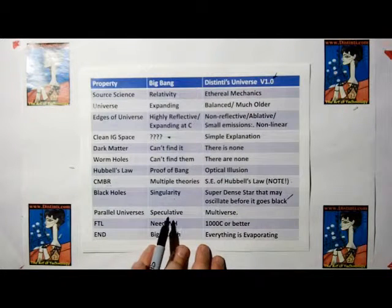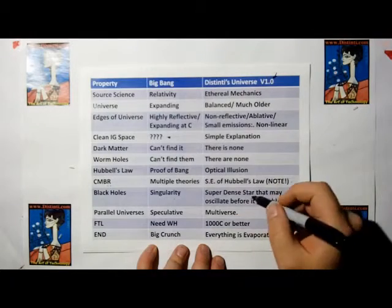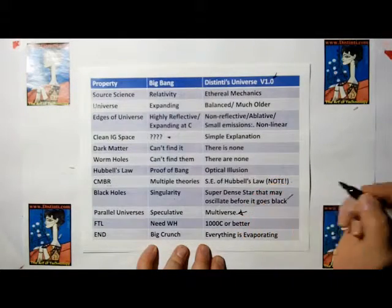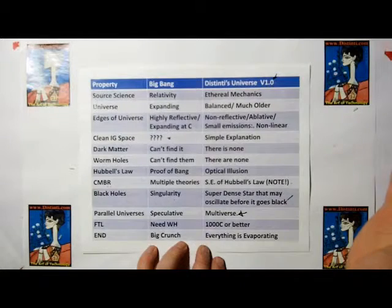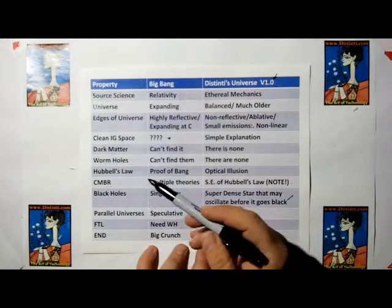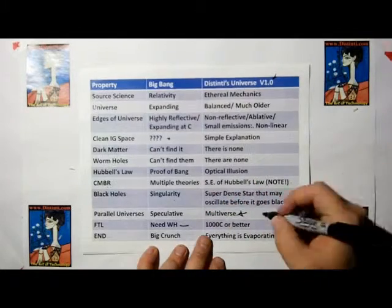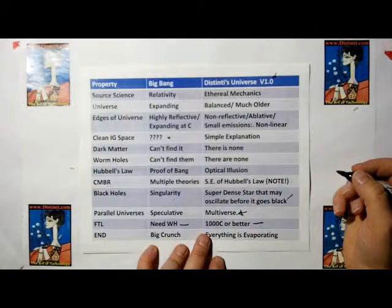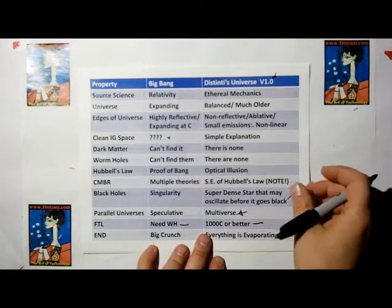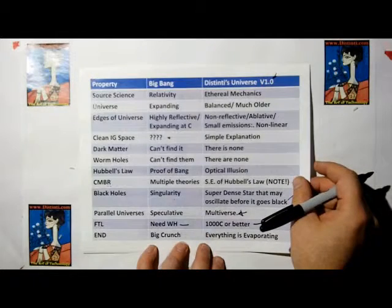In the Big Bang Theory, they have speculative stuff about parallel universes and alternate realities. I'm going to borrow a term from Lady Gaga and show that we actually exist as part of a multiverse. With faster-than-light travel and the Big Bang Theory, you need a wormhole. In Distinti's universe, you can work around the Einstein speed limit, and a thousand times speed of light or better is going to be a definite possibility.